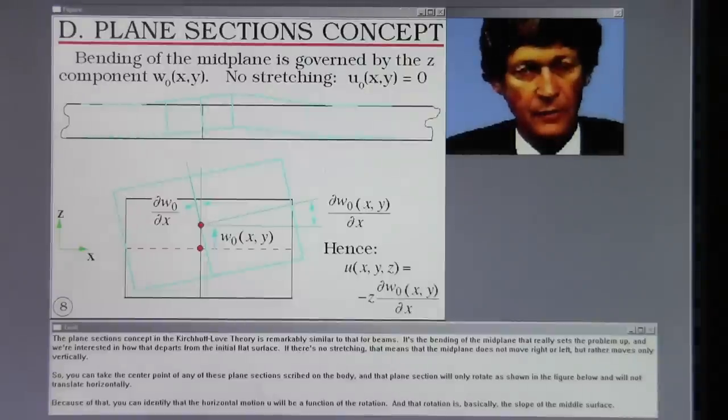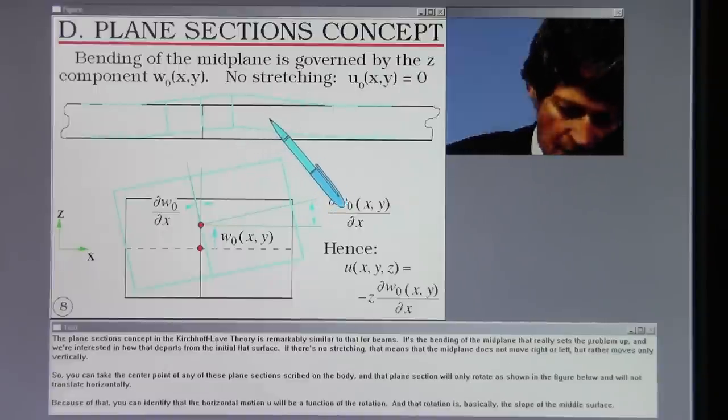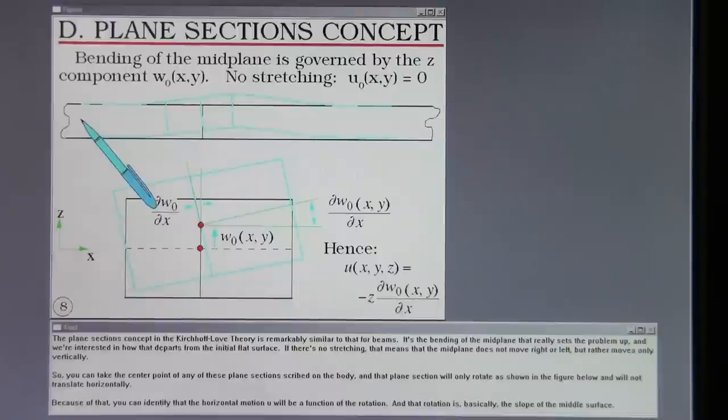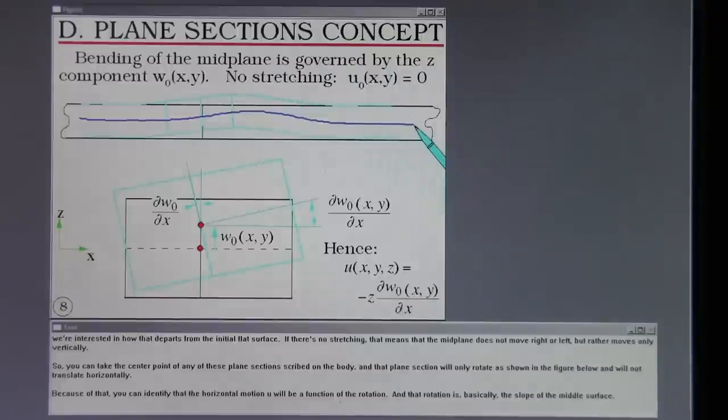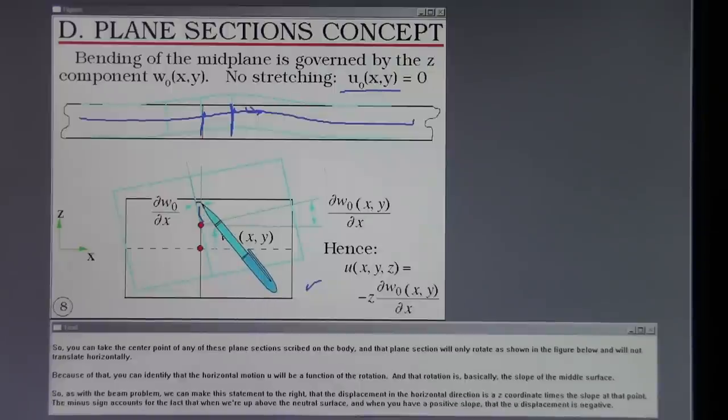The plane sections concept in the Kirchhoff-Love plate theory is remarkably similar to that for beams. It's the bending of the mid-plane that really sets the problem up, and we're interested in how that departs from the initial flat surface. If there's no stretching, that means that the midplane does not move right or left, but rather moves only vertically. So you can take the center point of any of these plane sections scribed on the body, and that plane section will only rotate as shown in the figure below, and will not translate horizontally. Because of that, you can identify that the horizontal motion U will be a function of the rotation, and that rotation is basically the slope of the middle surface.